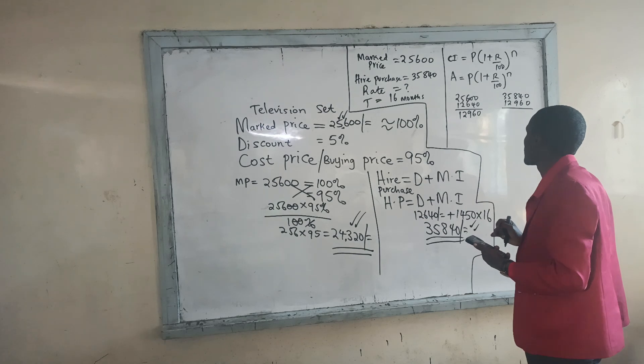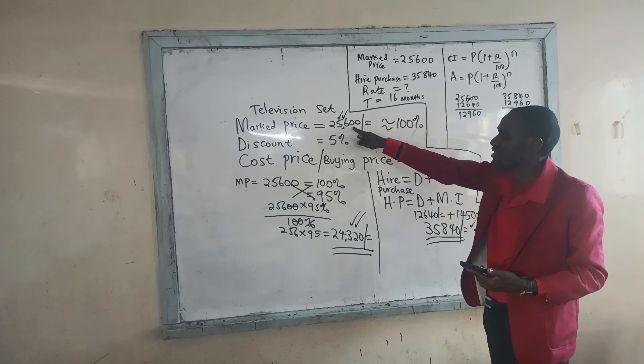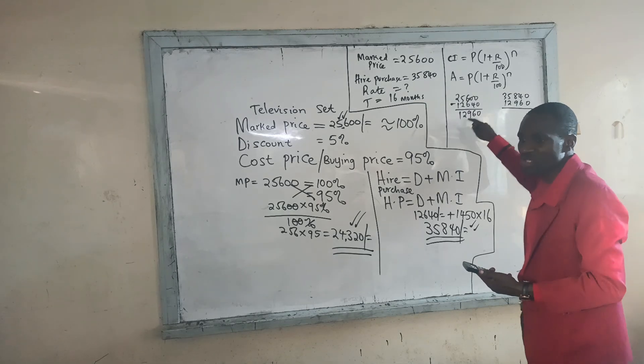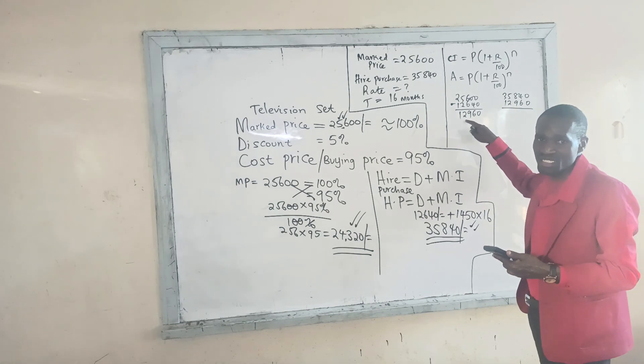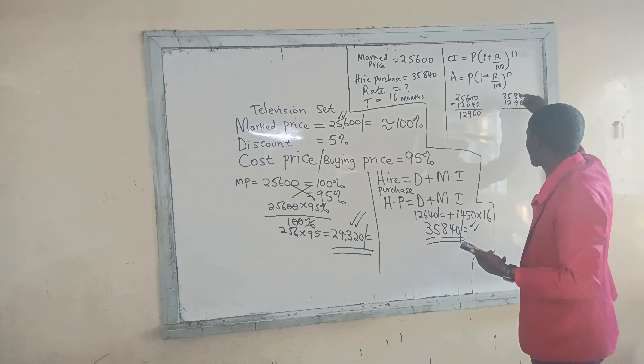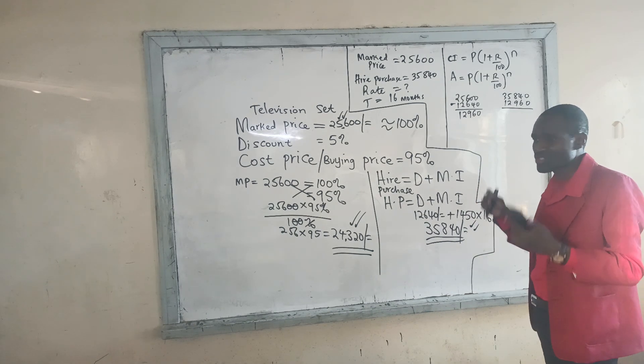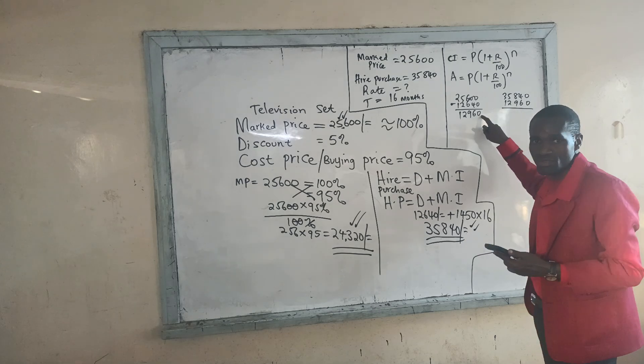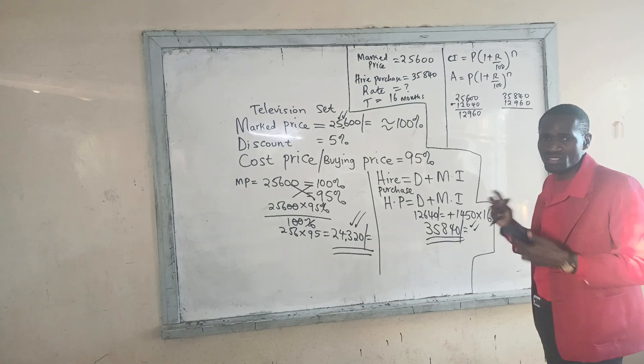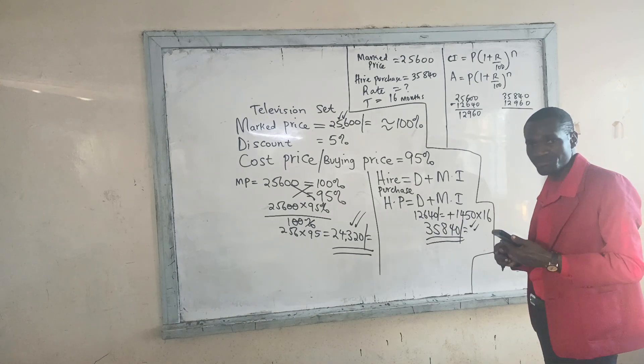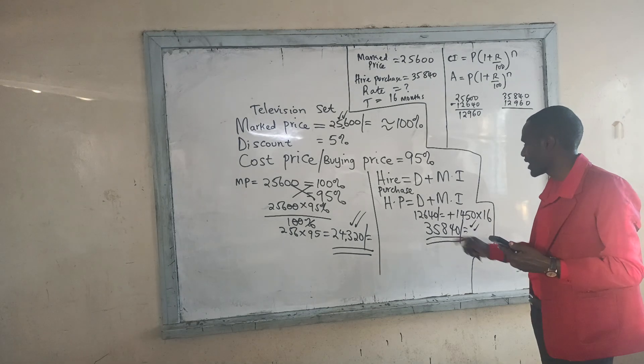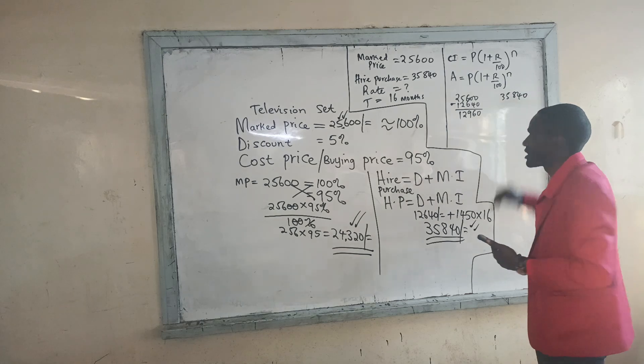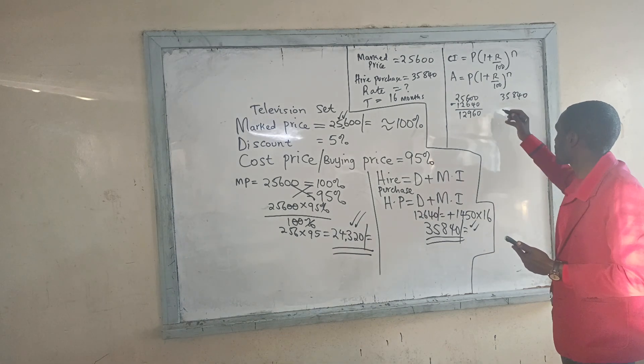How much money was able to get paid as interest? This is what was left to get paid. The cost was marked price 25,600, I have paid a deposit of 12,640, I get the difference to see how much money am I supposed to clear. But I am trying to clear this balance in 16 months. I want to see at which rate was I able to have this money earn interest on a monthly basis. So I need all of us to get how much was I able now later to pay as the extra. So I take the total amount of money I paid, 35,840.